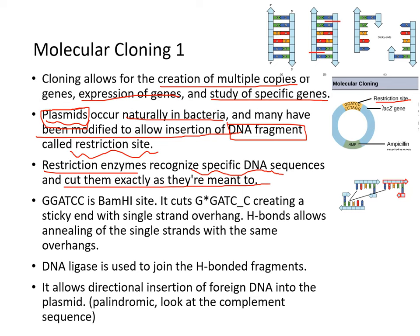This sequence here, GGATCC, is a BamHI site. It cuts the DNA like this. Note how the forward sequence is identical to the backward sequence, 5-prime to 3-prime — this is what we call palindromic sequences. Most restriction enzyme sites are palindromic. Because it creates a sticky end with a single-strand overhang — the overhang doesn't have matched base pairs — it can allow annealing: self-annealing of the plasmid, or insertion of a different fragment into that area.